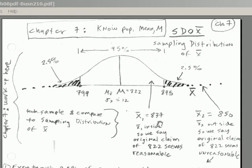We then made statements based on a 95% probability. We said the probability of getting an x-bar between 799 and 845 is 95%. That allowed us to take a sample and compare our sample to the sampling distribution of x-bar. If we went out and got a sample of $837, that lies within this range here. So we assume that the original claim is reasonable. In essence, 837, that's just sampling error. So we'll assume that the original value seems reasonable.